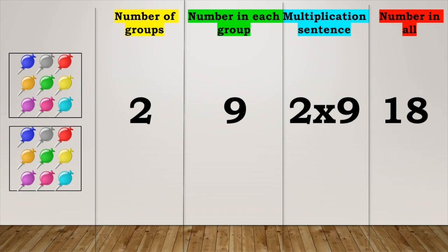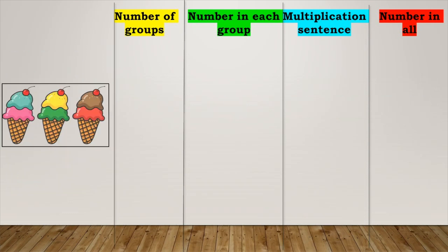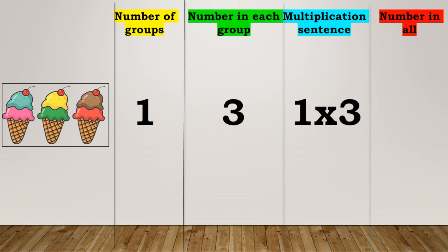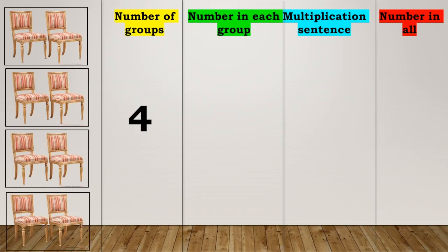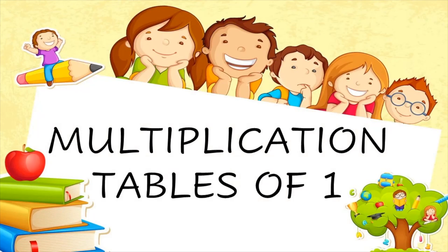Wasn't it fun? Now you try the next two. One group of three ice-creams in it — one threes are three. Four groups of two chairs each — four twos are eight. Let us learn how to write the multiplication tables of one with the help of pictures.